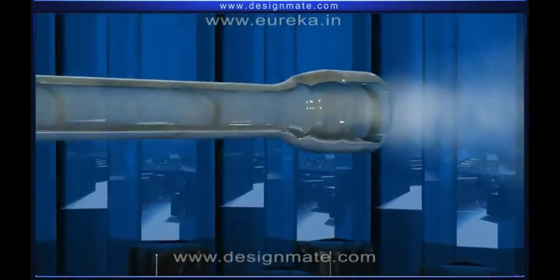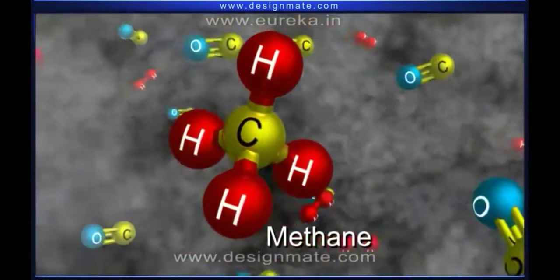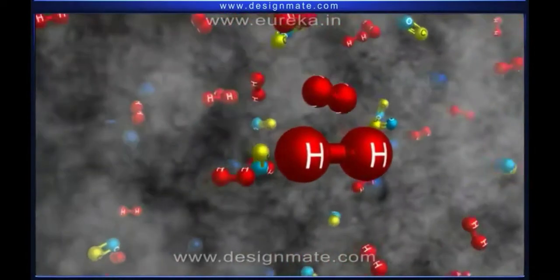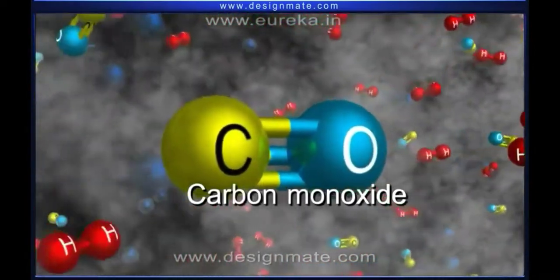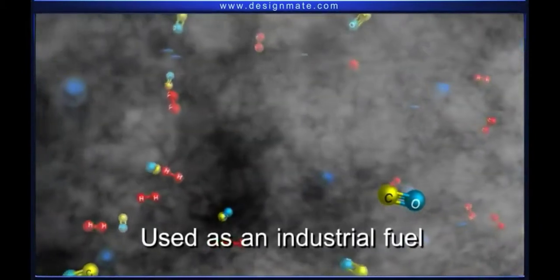Coal gas is mainly a mixture of methane along with hydrogen, carbon monoxide and other gaseous hydrocarbons and is used as an industrial fuel.